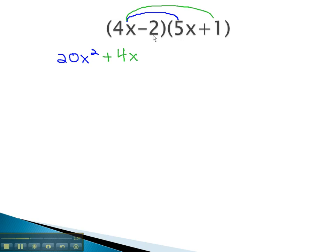Now, we will distribute the negative 2 through the parentheses. Negative 2 times 5x is negative 10x. Finally, negative 2 times 1 is negative 2.